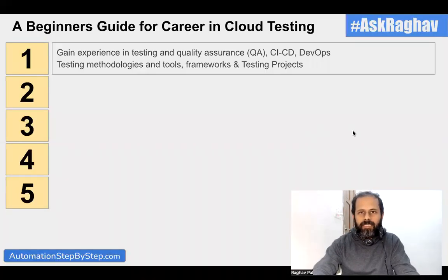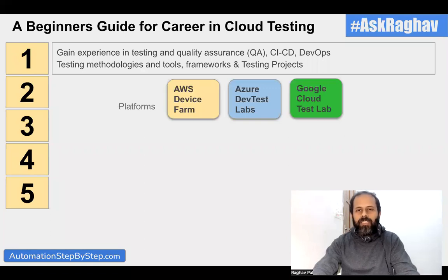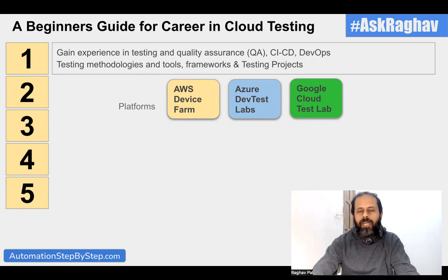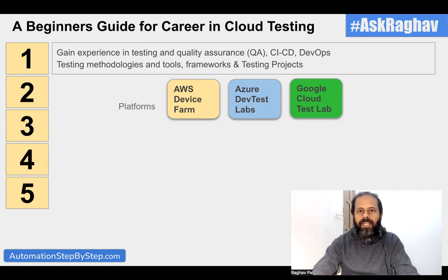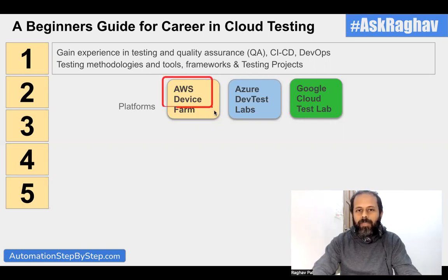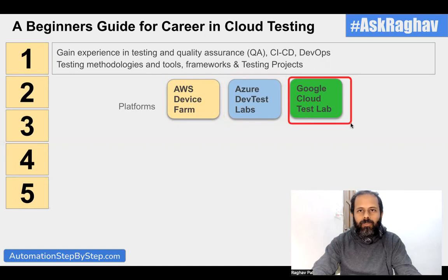Once you gain some experience in the testing field, the next thing you can do is start learning about cloud platforms. The three main common cloud platforms are Amazon Web Services (AWS), Google Cloud Platform, and Microsoft Azure. If you have already worked with or have some understanding of any of these, that is good. When we do cloud testing, we generally deploy our applications on cloud device farms, so you can learn about AWS Device Farm, Azure DevTest Labs, or Google Cloud Test Lab, also called Firebase.